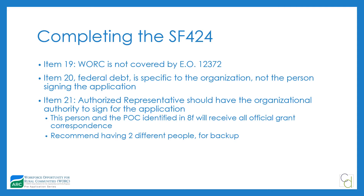For item 21, your authorized representative should have the organizational authority to sign the application. This person can be the same as the point of contact, but DOL and we recommend having two different people in those roles. Both receive official DOL communications, and having one person in both roles can cause delays — for example, missing the new grantee convening or required forms and deadlines. So while it's not required, having two different people is a good idea.